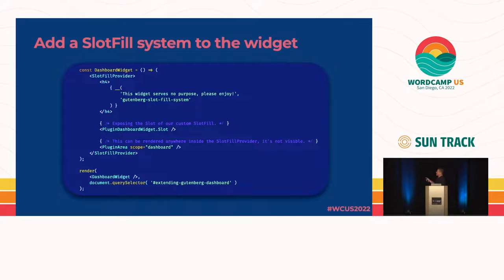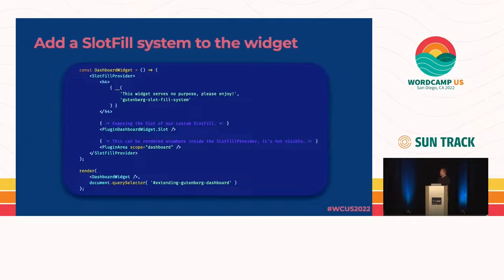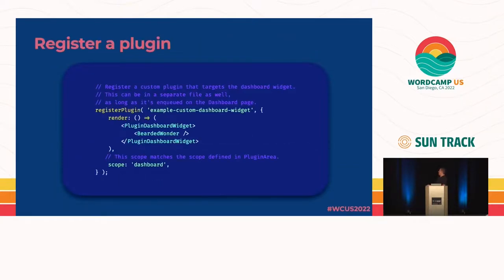I'm using React to render this to the dashboard widget. I should note I'm only using WordPress packages — the WordPress/element package is a wrapper for React, so I pulled render from that package. I'm not using a different version of React; this is all straight out of WordPress. Once that's in place, I can register a plugin scoped to my custom one.